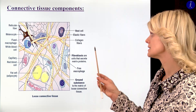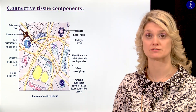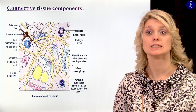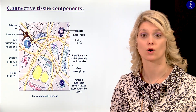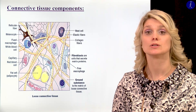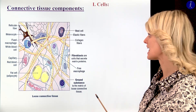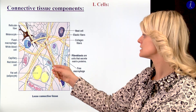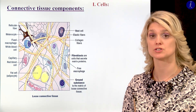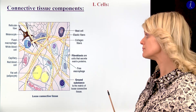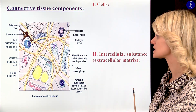Here you can see a schematic picture of the structure of the connective tissue. It is really important to know the main compartments. The connective tissue consists of cells, and between the cells we have the intercellular substance.